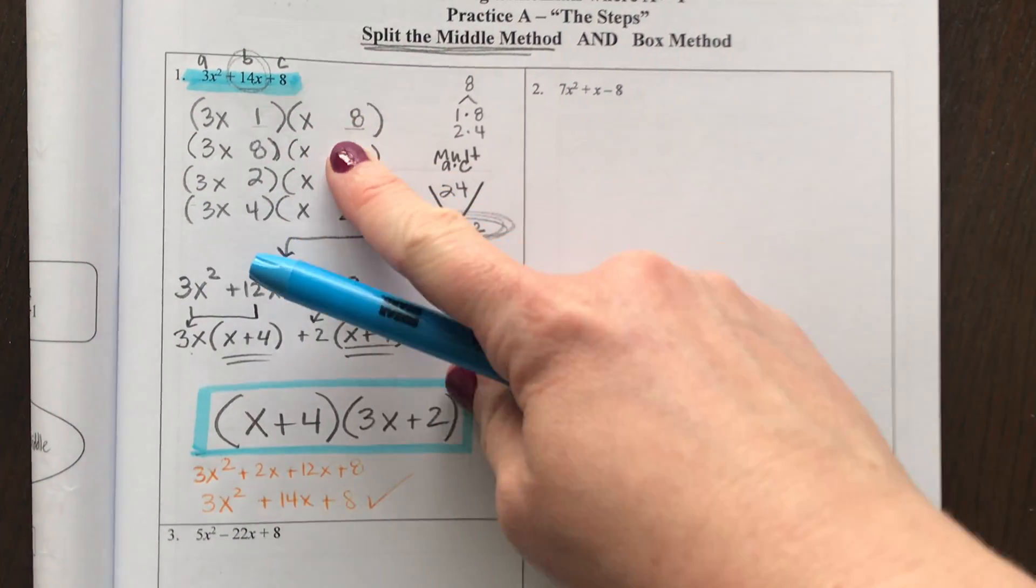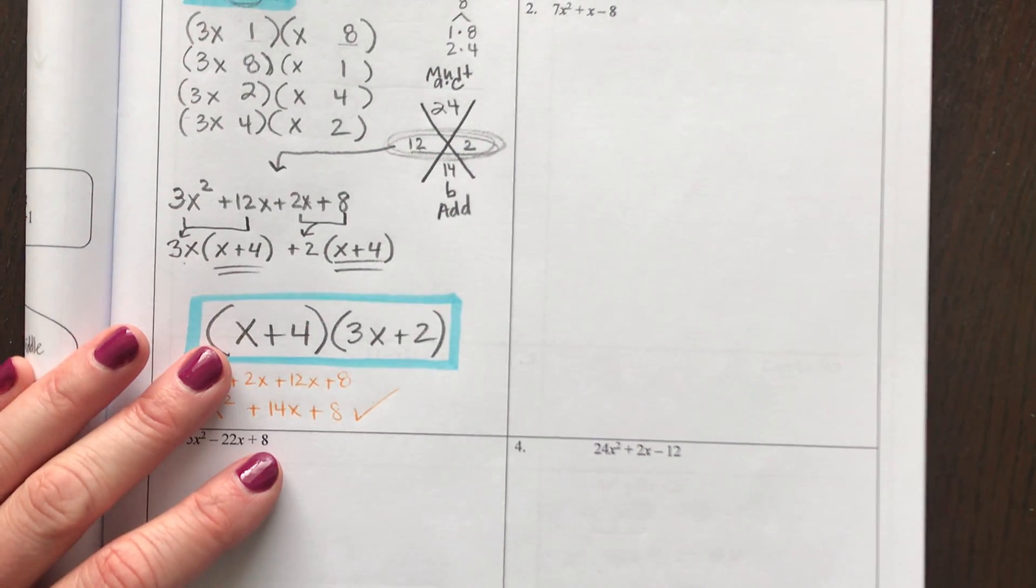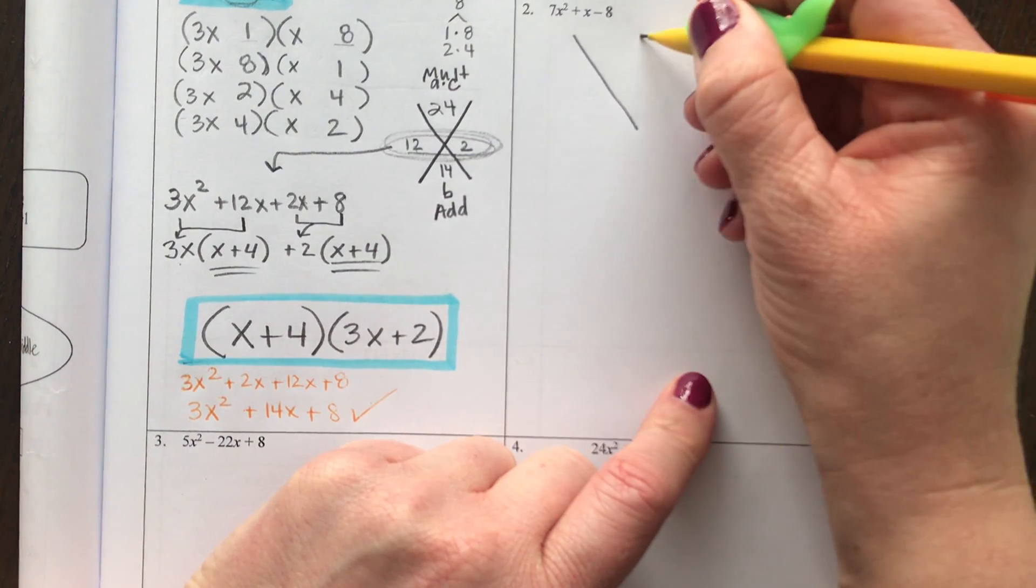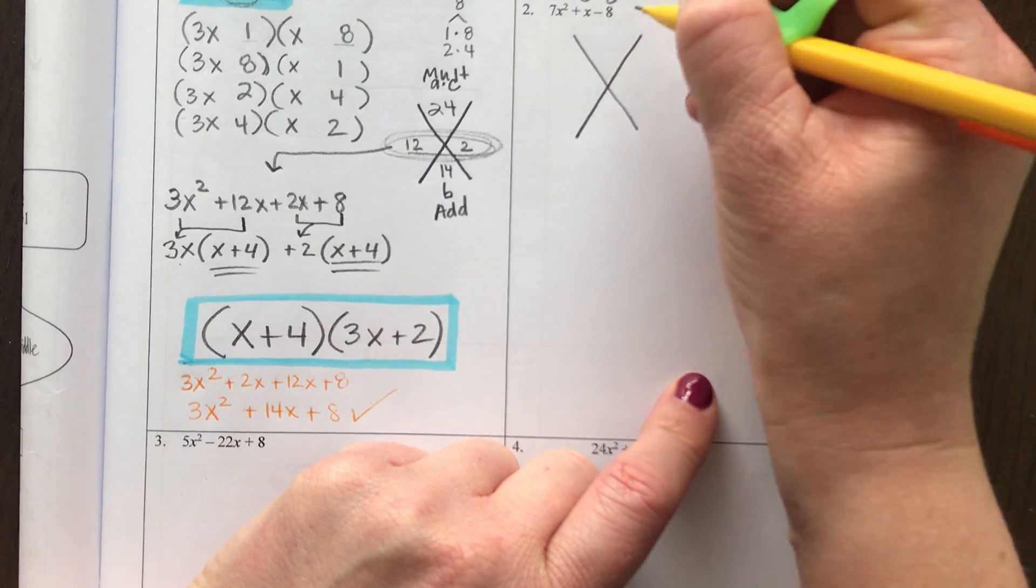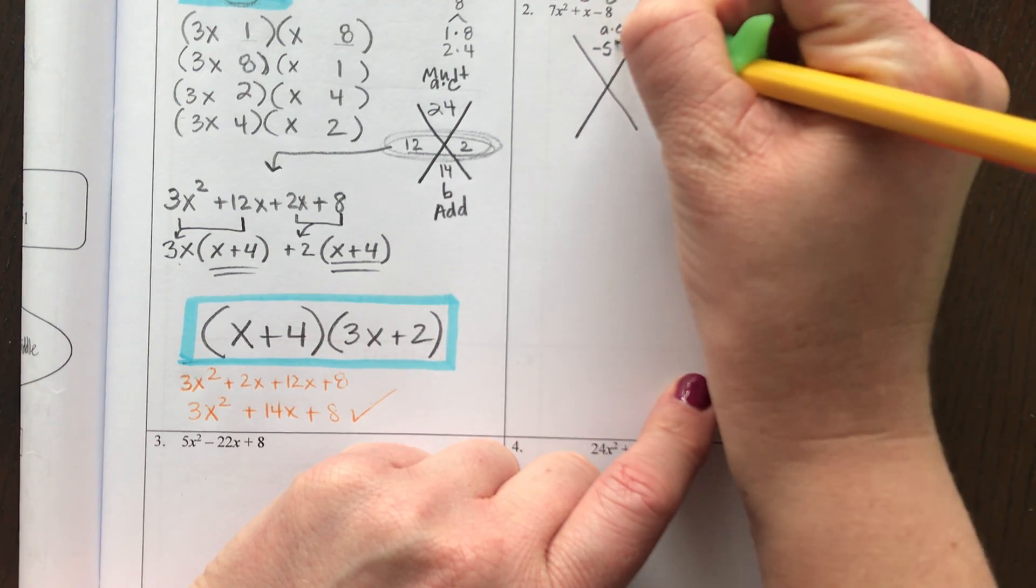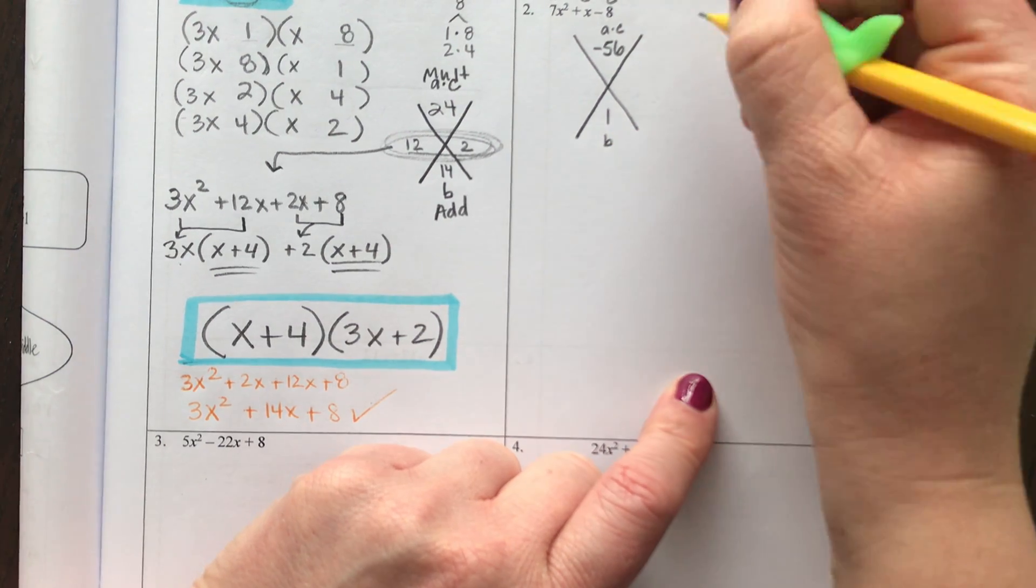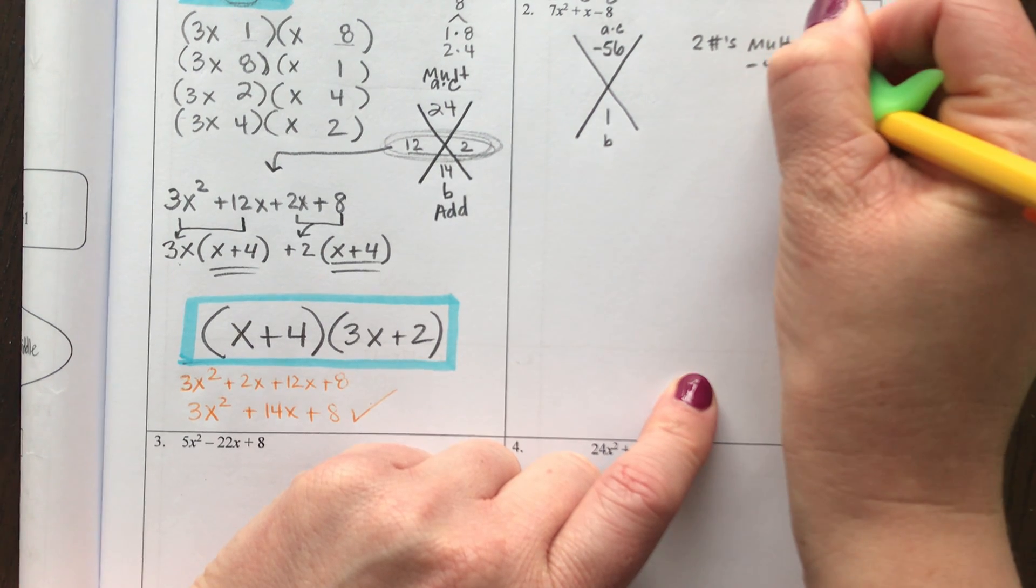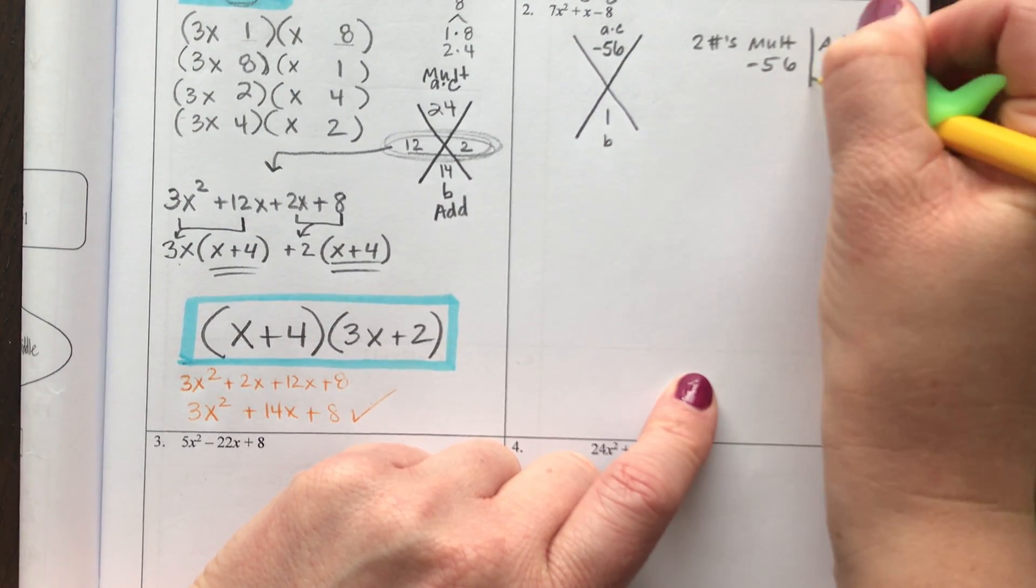Now I'm not going to do the guess and check anymore. I'm going to do three more examples of how to use the big X and do grouping. So again, I'm going to write my big X first. A is 7, B is 1x, and C is negative 8. At the top, we're going to put A times C. So 7 times -8 is -56. The B goes at the bottom, which is 1. Now find two numbers that multiply to make -56 and at the same time add to make 1.